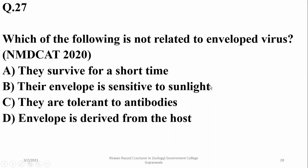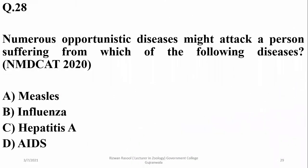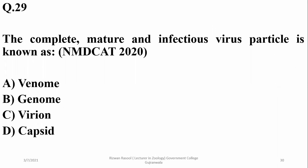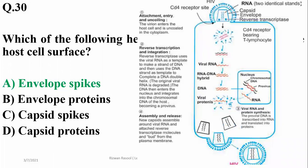Enveloped viruses survive for a shorter time, and their envelope is sensitive to sunlight. The envelope is derived from the host — that is the correct statement. Numerous opportunistic diseases might attack a person suffering from AIDS. The complete mature infectious virus particle is known as a virion. The structures that help in attachment of HIV to the host cell surface are the enveloped spikes.